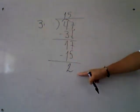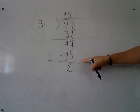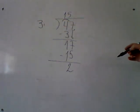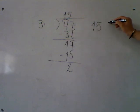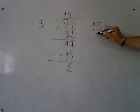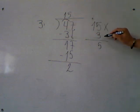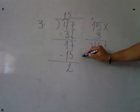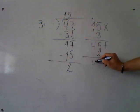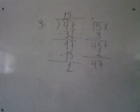Does 3 fit in 2? No. More numbers to bring down? No. Now let's close with the check. Quotient times divisor: 3 times 5 is 15, carry 1. 3 times 1 is 3, plus 1 is 4. Plus the remainder, which is 2. My final answer is 47, and that's my dividend.